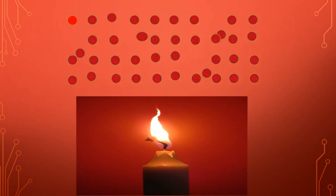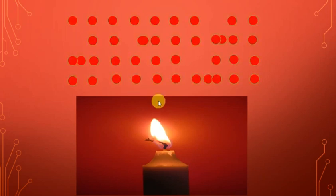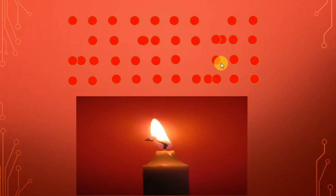When temperature is increased, kinetic energy increases, resulting in increased collisions. This results in increased resistance, and this way it controls the current in the circuit.